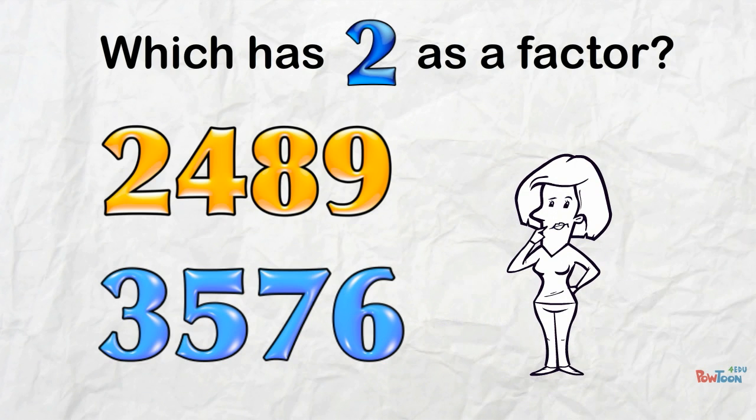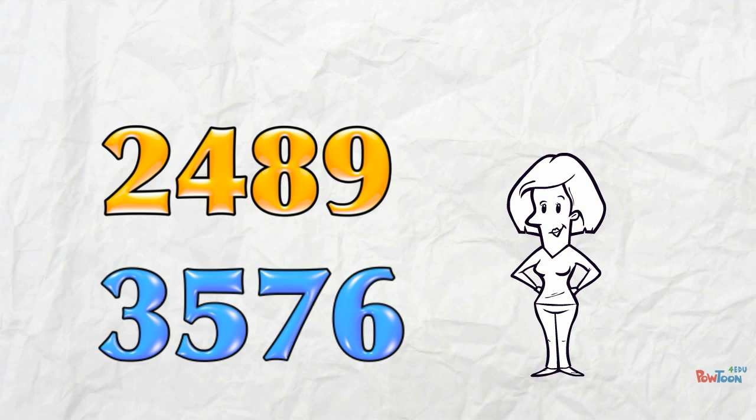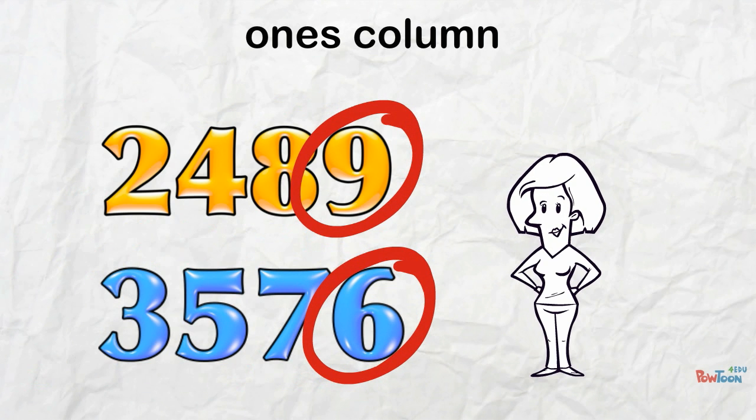I hope you didn't panic at the size of the numbers because the size doesn't make a bit of difference. No matter the size of the number, we know if a number is divisible by 2 or not by looking at the very last digit. We look at the ones column here.